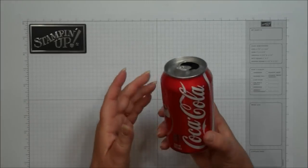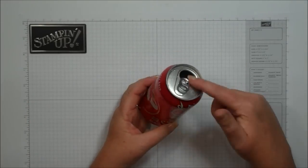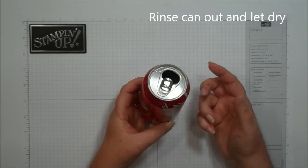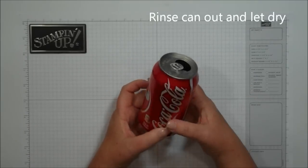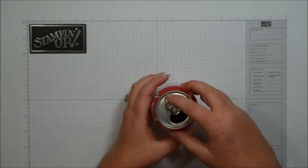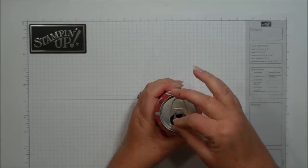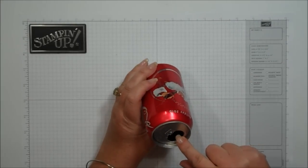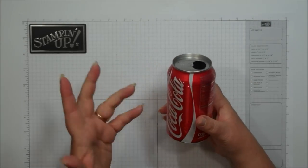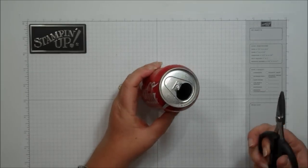First you're going to start with your pop can. You'll want to drink the pop out of it first, of course, and then rinse it out and let it dry. Then you'll want to pop the tab off your can. My tab fell inside the Coke can, so I'm just going to cut it and get it out.